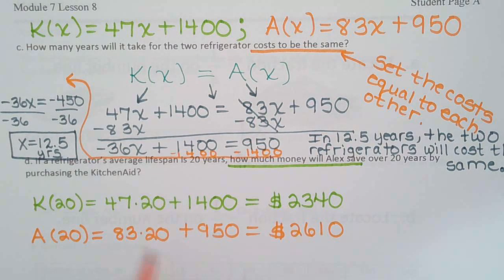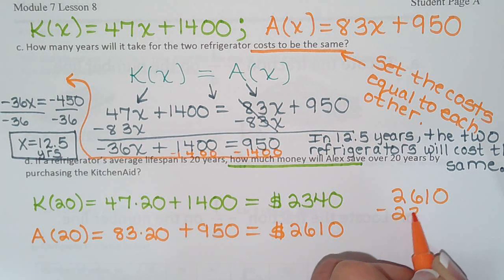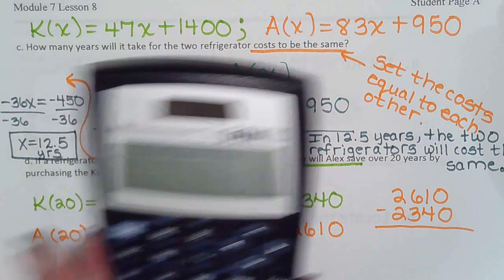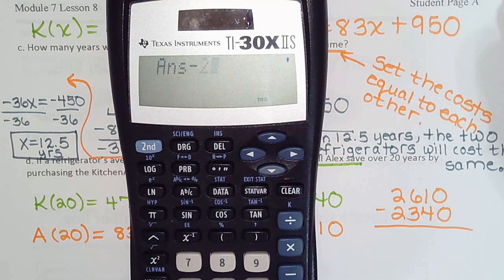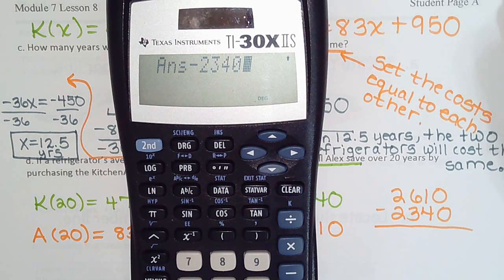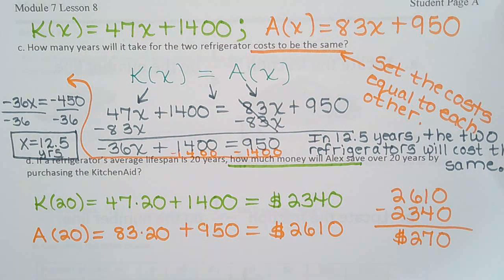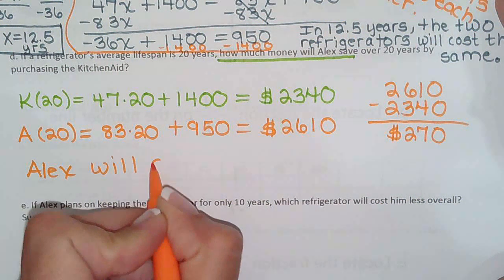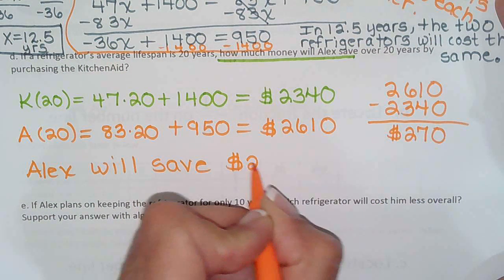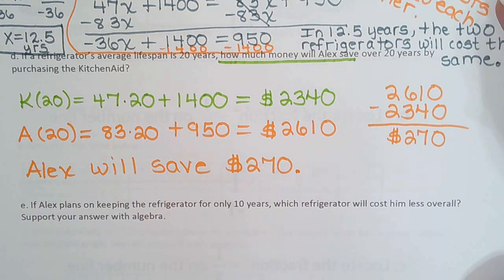So how much will he save? So $2,610 minus $2,340. So we have $2,610 in our calculator, so all we have to do is subtract $2,340. And that is $270. So Alex will save $270 by buying the KitchenAid instead of the Amana, if he keeps it for 20 years.